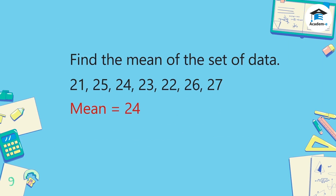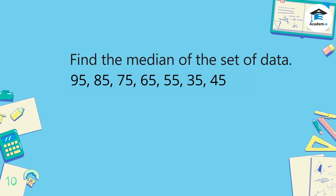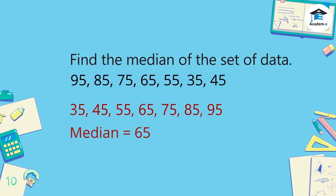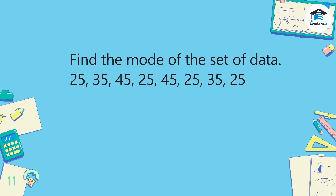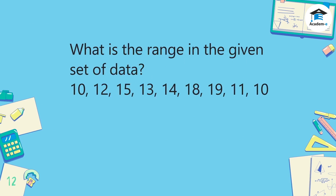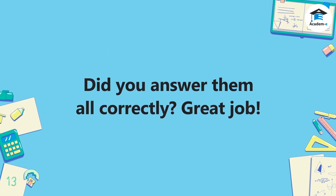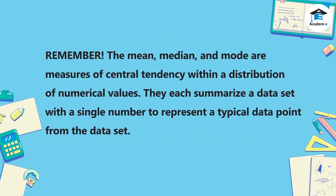The mean is 24. Find the median of the set of data — the median is 65. Find the mode of the set of data — the mode is 25. What is the range in the given set of data? The range is 9. Did you answer them all correctly? Great job!